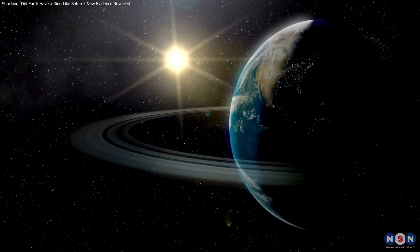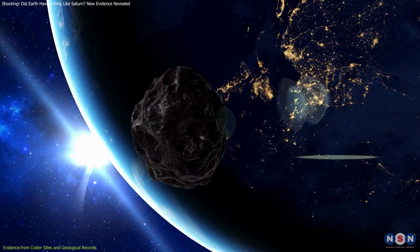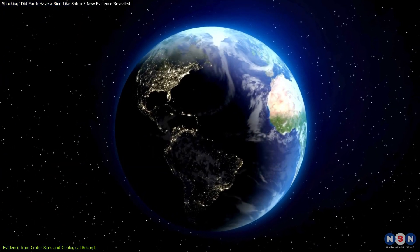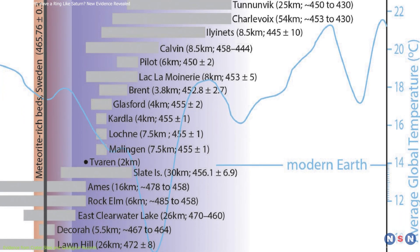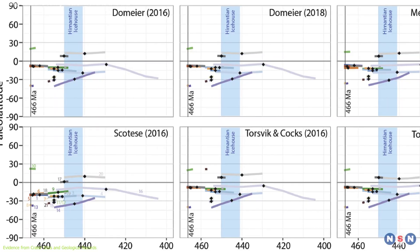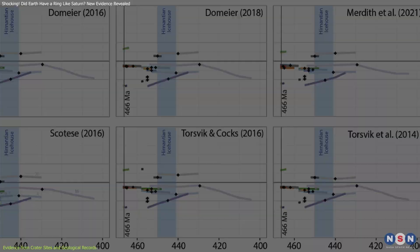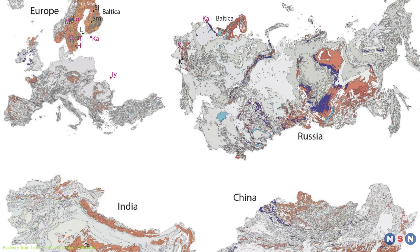The hypothesis that Earth may have once had a ring of debris after a near miss with an asteroid is not just theoretical. It is supported by geological evidence. Researchers have identified 21 impact craters around the world that date back to the Ordovician period. These craters are particularly intriguing because they are not randomly scattered. Instead, they appear to have been located near Earth's equator when they were formed.